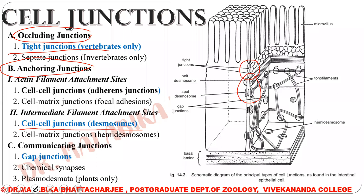These help in adhering the cell. And finally, under the communicating junctions, we will be studying the gap junctions. The gap junctions are small channels present on the cell membrane, which help in transport of very, very small molecules.